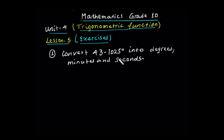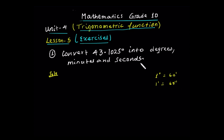Convert 43.1025 degrees into degrees, minutes and seconds. Now let's see the solution for this one. You remember that one degree is equal to 60 minutes, and one minute is equal to 60 seconds. The fraction of a degree can be written in terms of minutes and seconds.